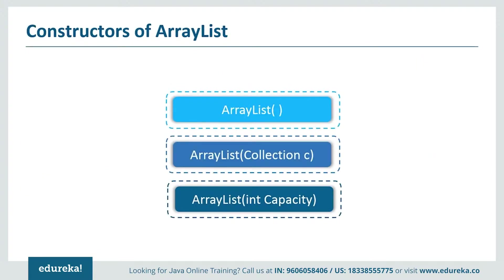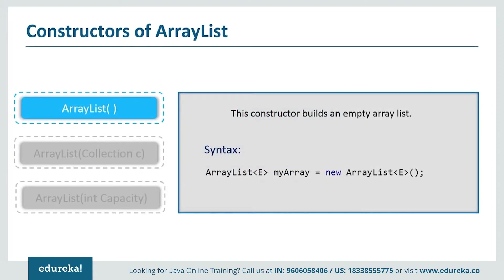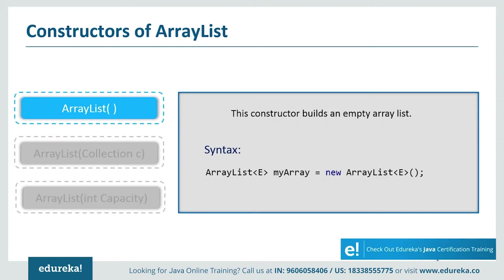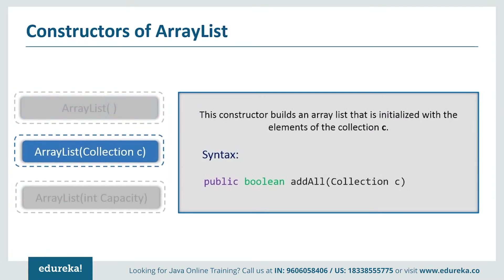Now let's see the various constructors supported by Java ArrayList. First, ArrayList() — this constructor builds an empty ArrayList. In terms of syntax, 'my array' is a reference to an ArrayList that holds references to objects of type E, with an initial capacity of 10 cells, though the capacity will be increased as needed. Next, ArrayList(Collection c) — this constructor is used to add all the elements of a specified collection C to the current ArrayList.